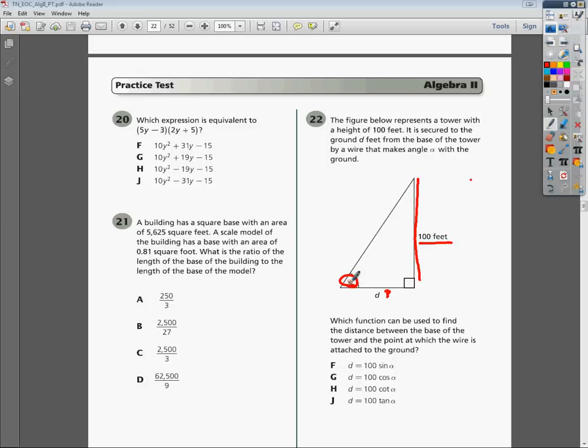Which function can be used to find the distance? We want to know what the distance is between the base of the tower and the point at which the wire is attached to the ground. Before we even deal with this diagram, we should probably remember some of our trig functions.